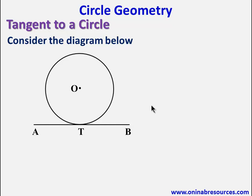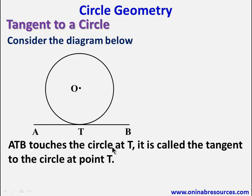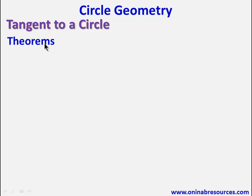First, consider the diagram below. ATB touches the circle at T. ATB is a straight line, and it is called the tangent to the circle at T. This is a circle with center O, and a straight line ATB touches the circle at point T. ATB is a tangent to the circle at T. We'll look at some theorems on tangents to a circle.